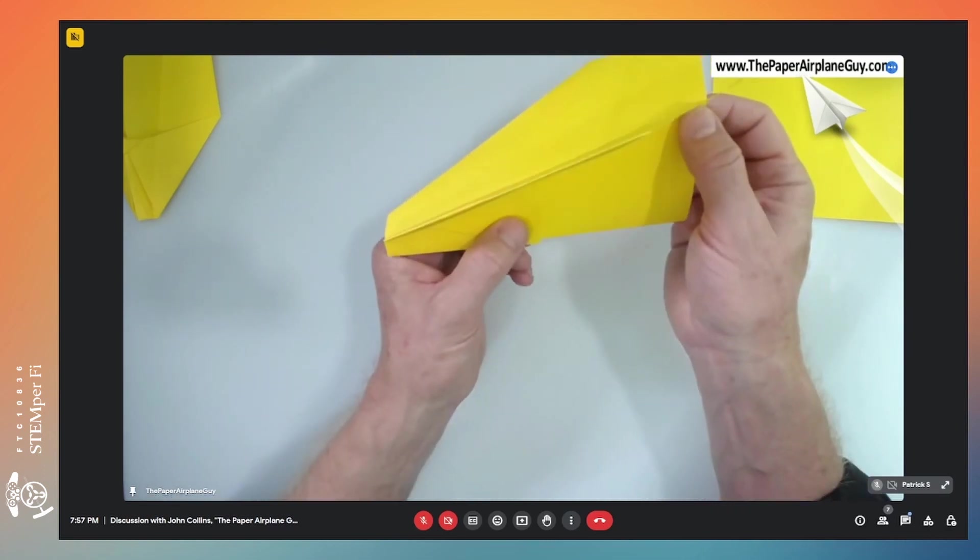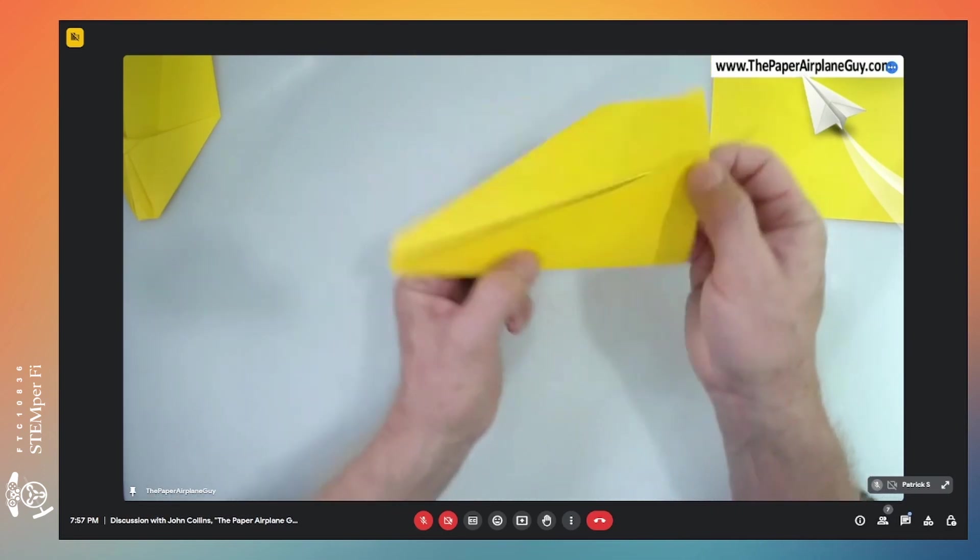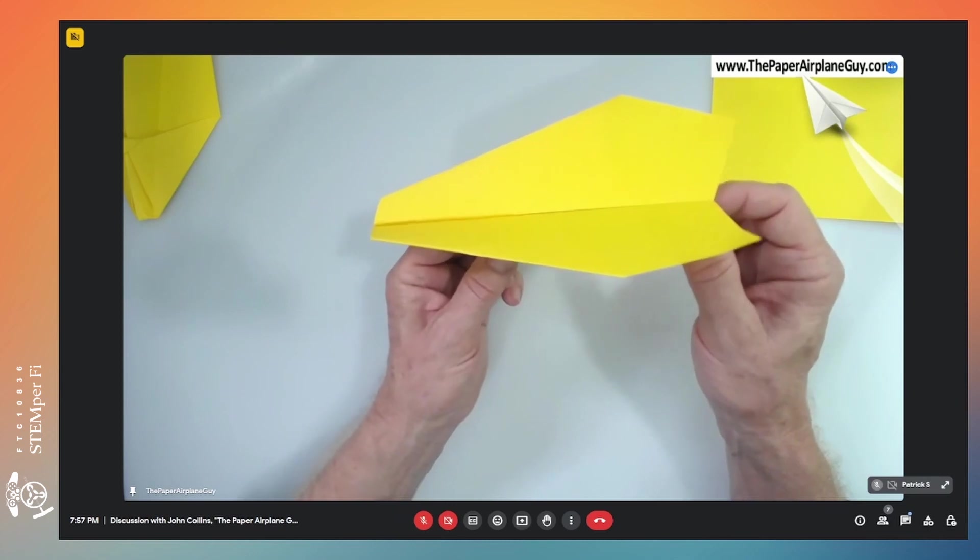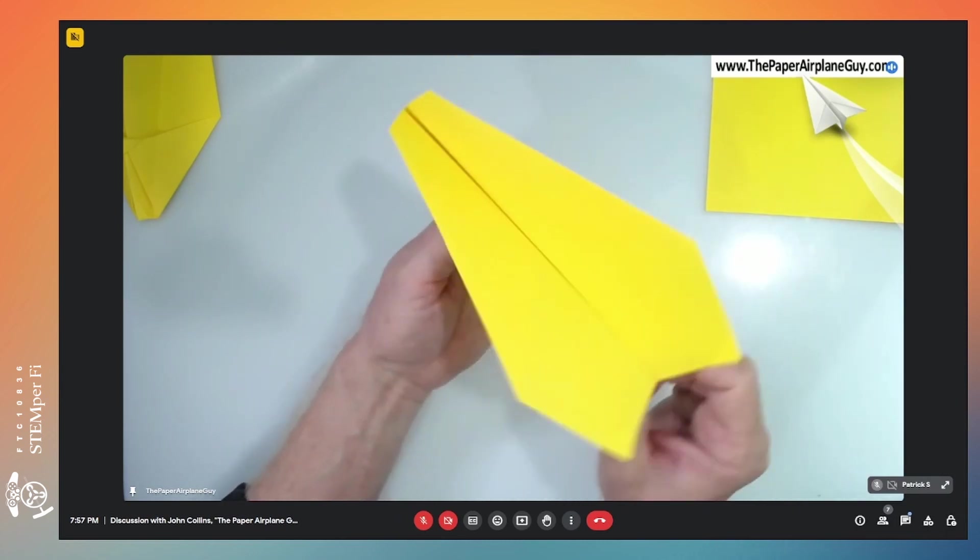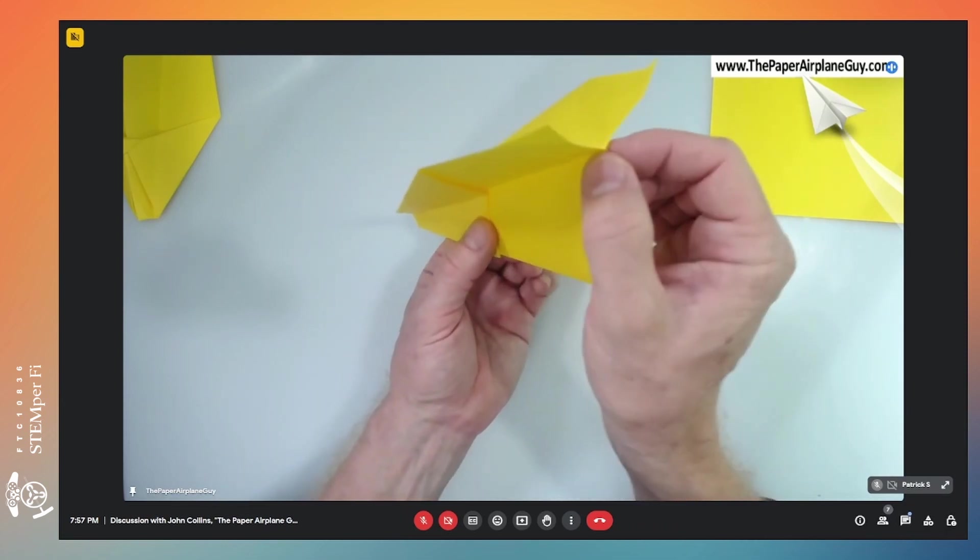So now you've got control over what aerodynamicists call pitch, like with an elevator adjustment. Aerodynamicists call this yaw. I still don't know why that's called yaw, but that's a rudder control.